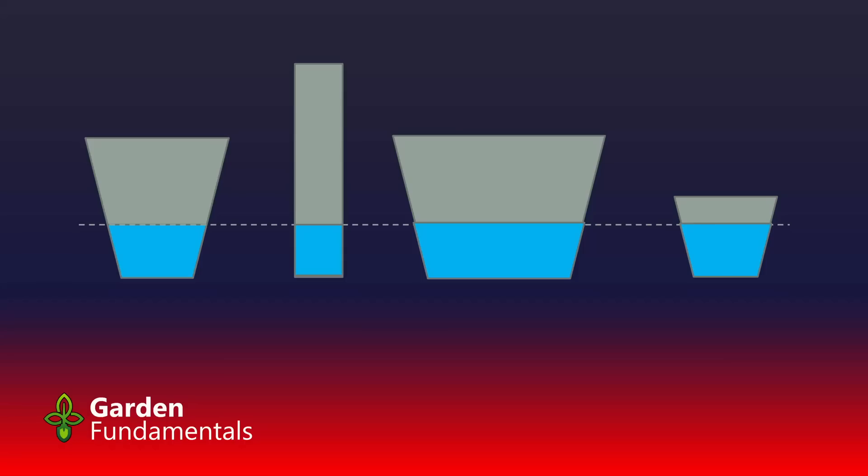So why is this information useful? Well, roots don't like to be in that saturation zone. They don't like 100% water. They prefer a mixture of air and water. Roots that are too wet can rot.